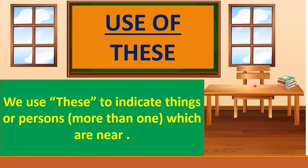For example, yahan table ke near kya hai? Books hain. To yahan hum kahenge: 'These are books.' Okay, 'these' ke saath always 'are' lagega, not 'is.' Remember that, kids.